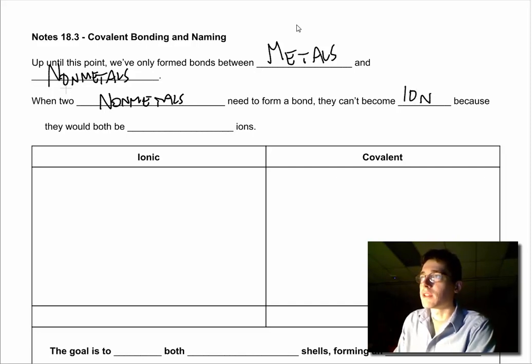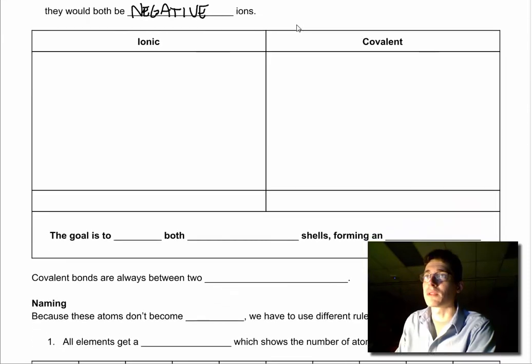They can't become ions because both of those atoms want to be negative. They want to be anions. You cannot have two negative atoms bonded together using ionic bonding, so there's a different method we have to use.